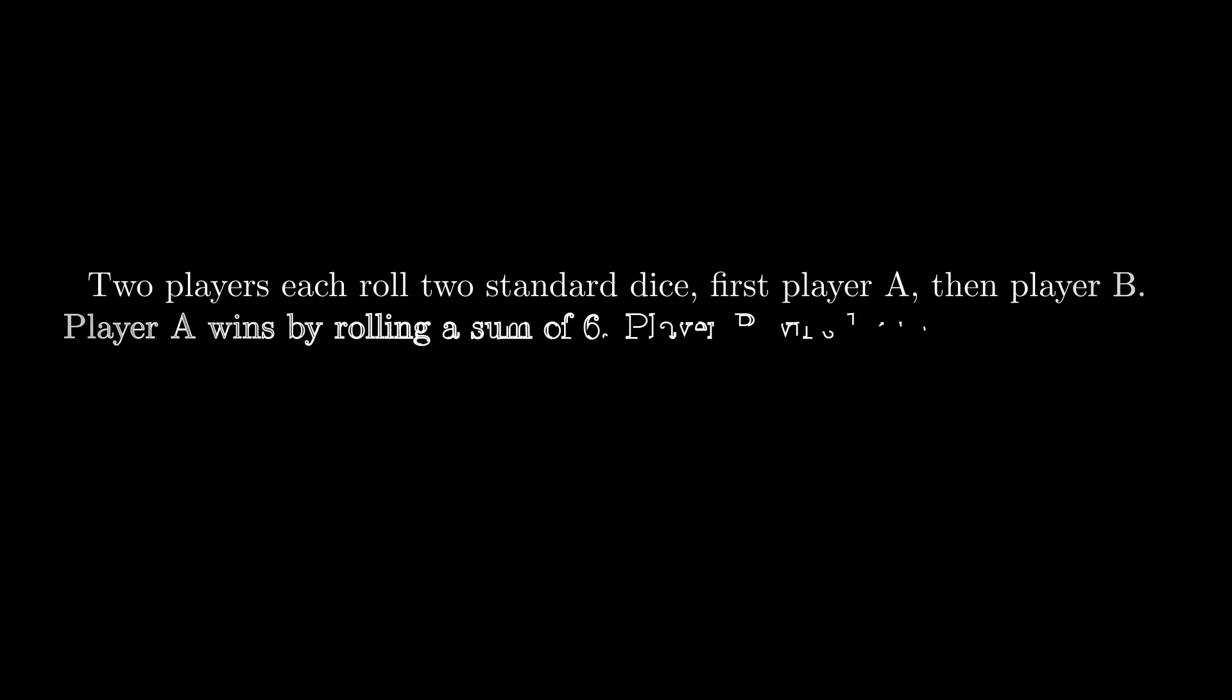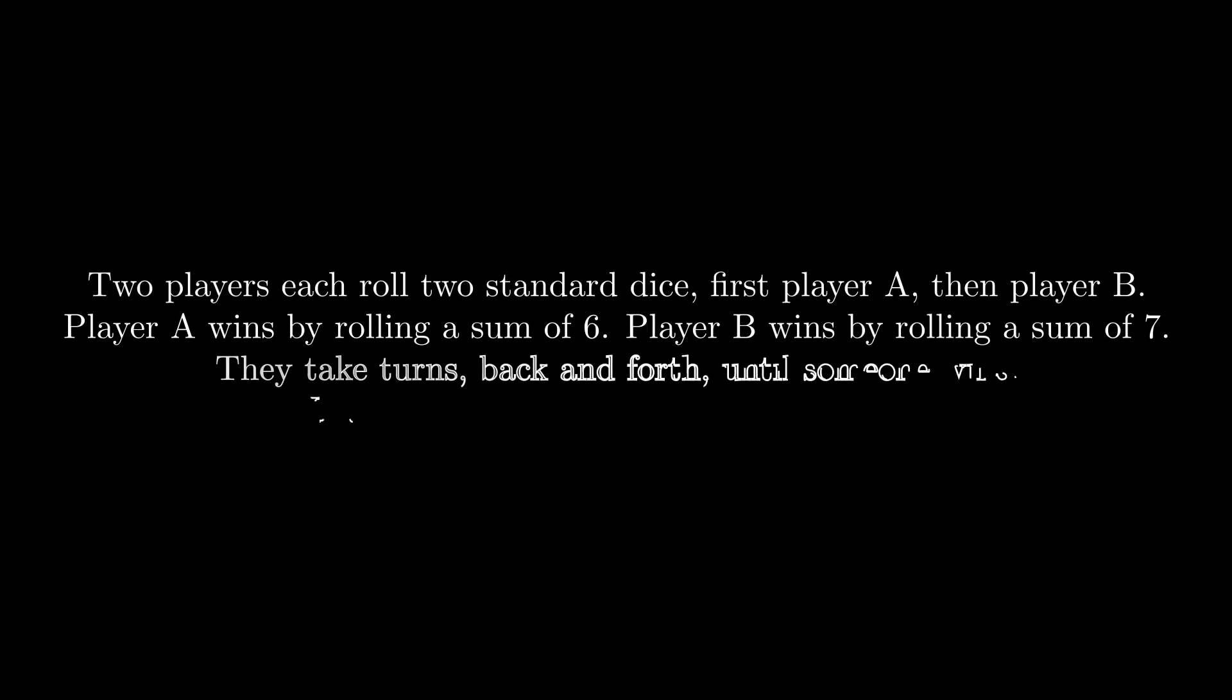Two players each roll two standard dice. First player A, then player B. Player A wins by rolling a sum of 6 while player B wins by rolling a sum of 7. They take turns back and forth until someone wins. What is the probability that player A wins?